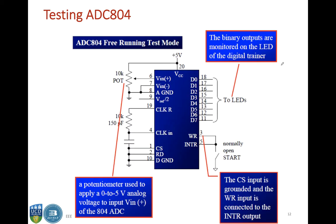This is a free-running test mode of the ADC 804 to test if it is working correctly. A potentiometer is used to apply a 0 to 5 volt analog voltage to the input pin Vin and the binary outputs are monitored on the LEDs of the digital trainer. The CS input is grounded and the WR input is connected to the INTR pin. This free-running mode will keep blinking the LEDs according to changes in the potentiometer, telling you whether the IC is functioning properly.